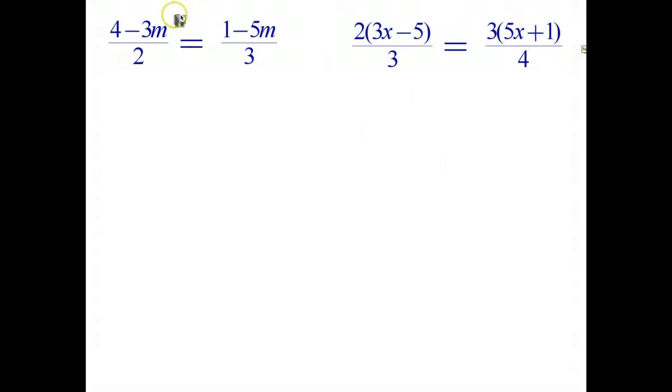So having a look at our first example, on the left hand side we have the fraction 4 take 3m all over 2, and on the right hand side the fraction 1 take 5m all over 3. Now it turns out the easiest, or the best step to do here is to get rid of the fractions as soon as possible. So we can actually get rid of both of those fractions in one step. The first thing I'm going to do before I do that though is put in the brackets that were implied.